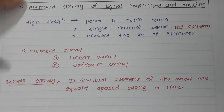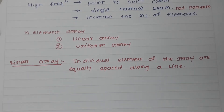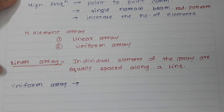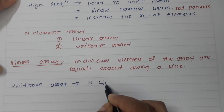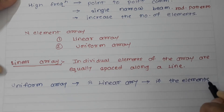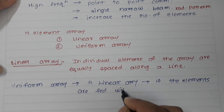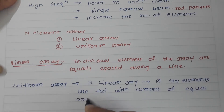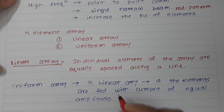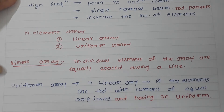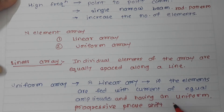The second type of N-element array is the uniform array. A uniform array is a linear array where the elements are fed with currents of equal amplitude and having a uniform progressive phase shift along the line.